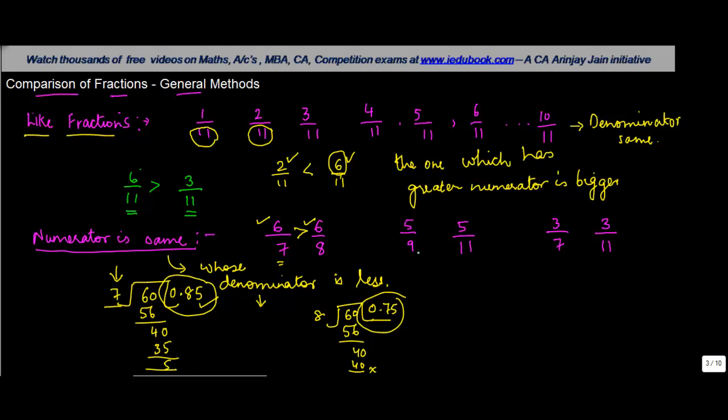Applying the same logic here, because the denominator is small in this one, therefore this fraction has to be greater than the other one. Similarly, because the denominator is small here, therefore 3 upon 7 has to be greater than 3 upon 11.